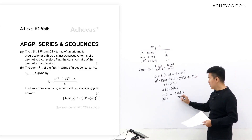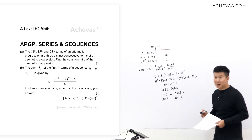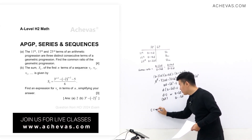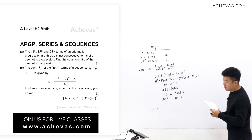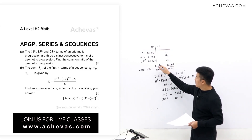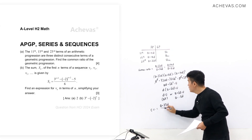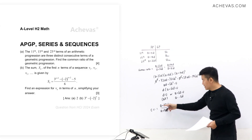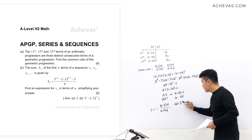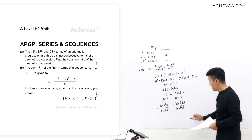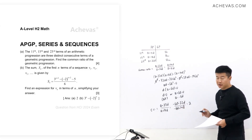We let a = -6d. Now we can find the common ratio. Using (a + 22d) / (a + 14d), substituting a = -6d gives (-6d + 22d) / (-6d + 14d) = 16d / 8d. The d's cancel, giving a common ratio of 2.